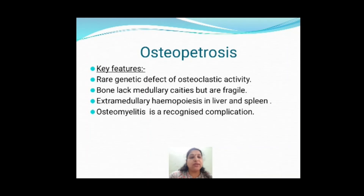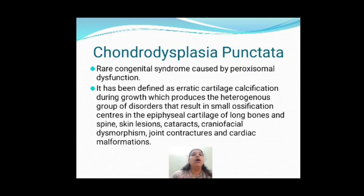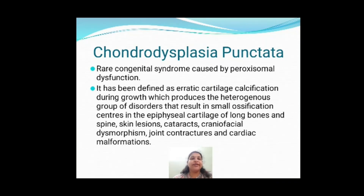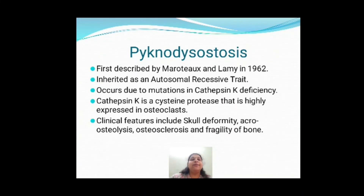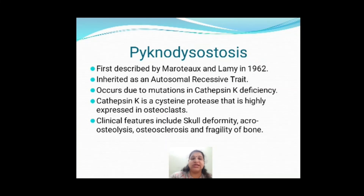One more disease is chondrodysplasia punctata — a genetic disease of bone in which there is going to be erratic cartilage calcification producing a heterogeneous group of disorders. Just know that cartilage calcification is not going to be proper. Pycnodysostosis involves deficiency of one enzyme called cathepsin K, and it is inherited as an autosomal recessive trait. Just know the name and what is going to go wrong.